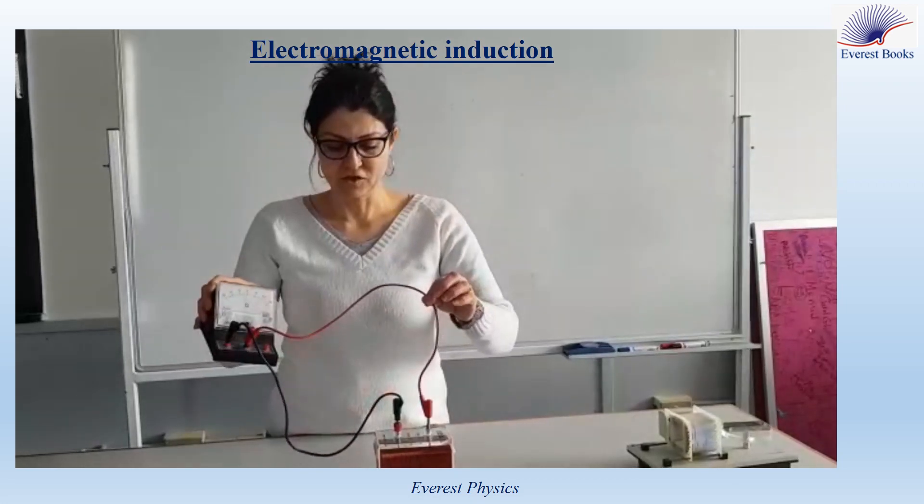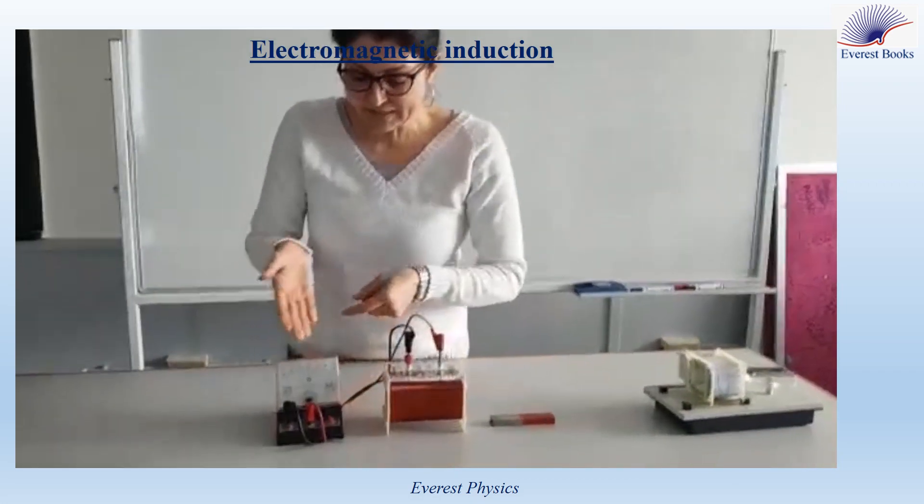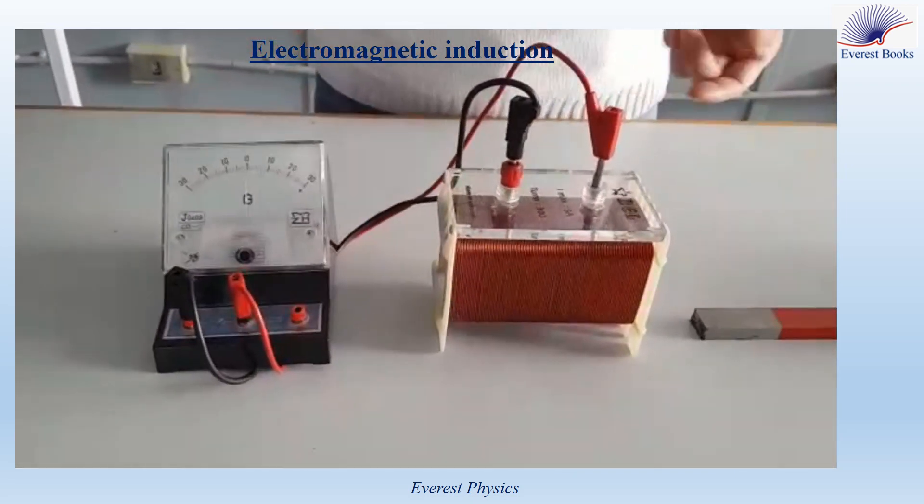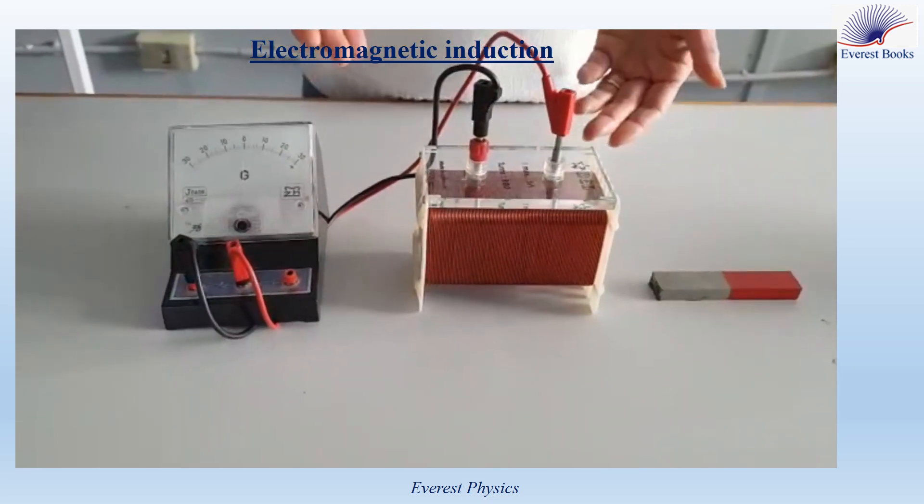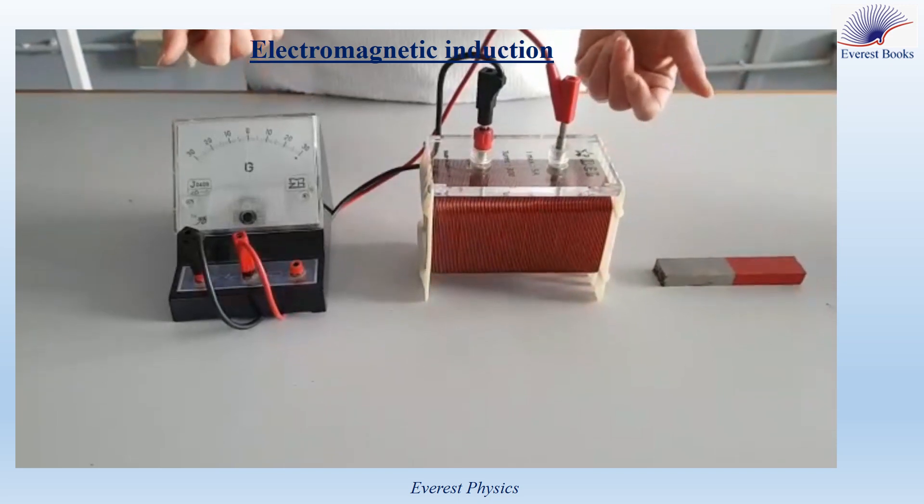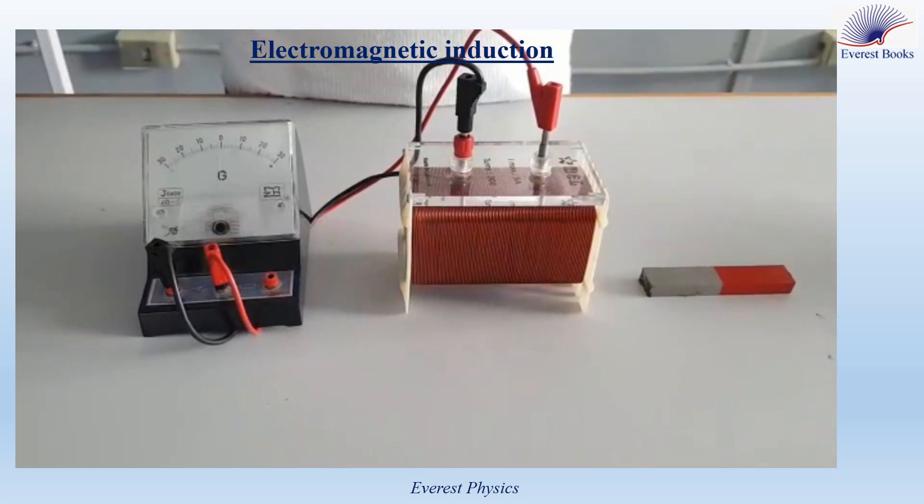We connect the galvanometer across the terminals of a copper coil. As you see, the needle of the galvanometer points to zero because this circuit carries no electric current. The circuit does not include a source of electromotive force, so this circuit does not carry electric current.